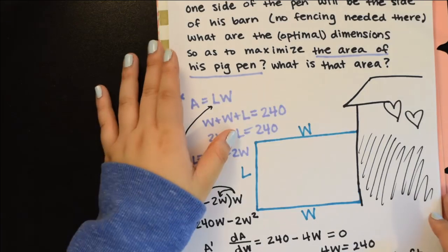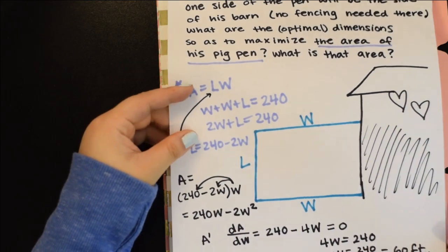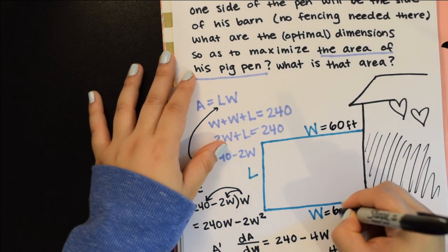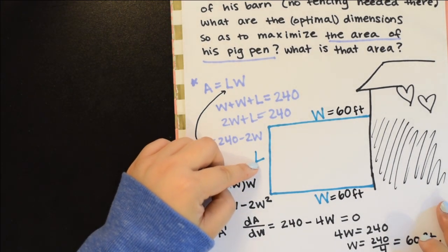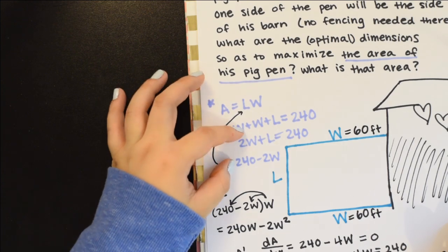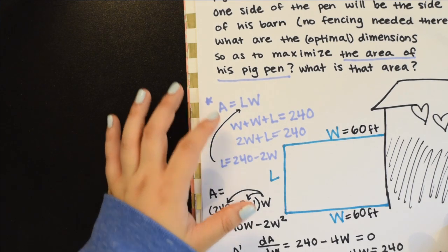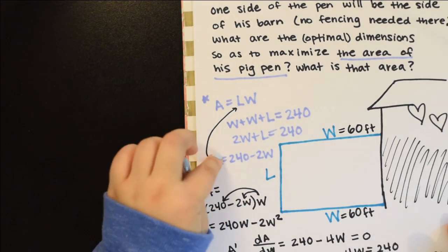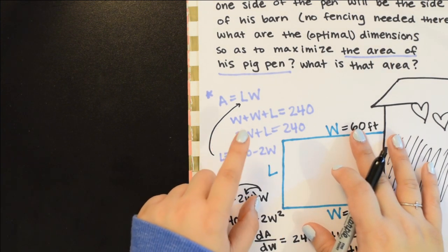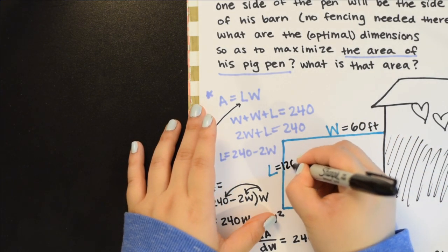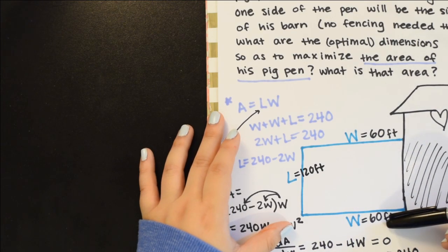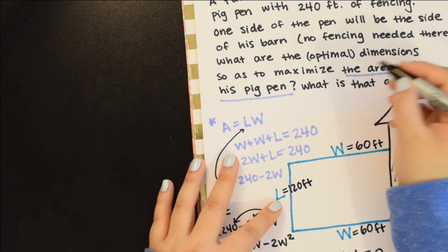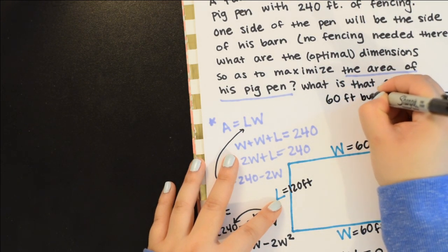We have W equals 60 feet. The question is what are the optimal dimensions to maximize and what is that area. We also want the length, so you can plug back into our constraint. If you plug here, we have 2 times 60 is 120, 240 minus 120 is 120. That works because 60 plus 60 is 120 plus 120 is my 240 feet of fencing. So our dimensions would be 60 feet by 120 feet.